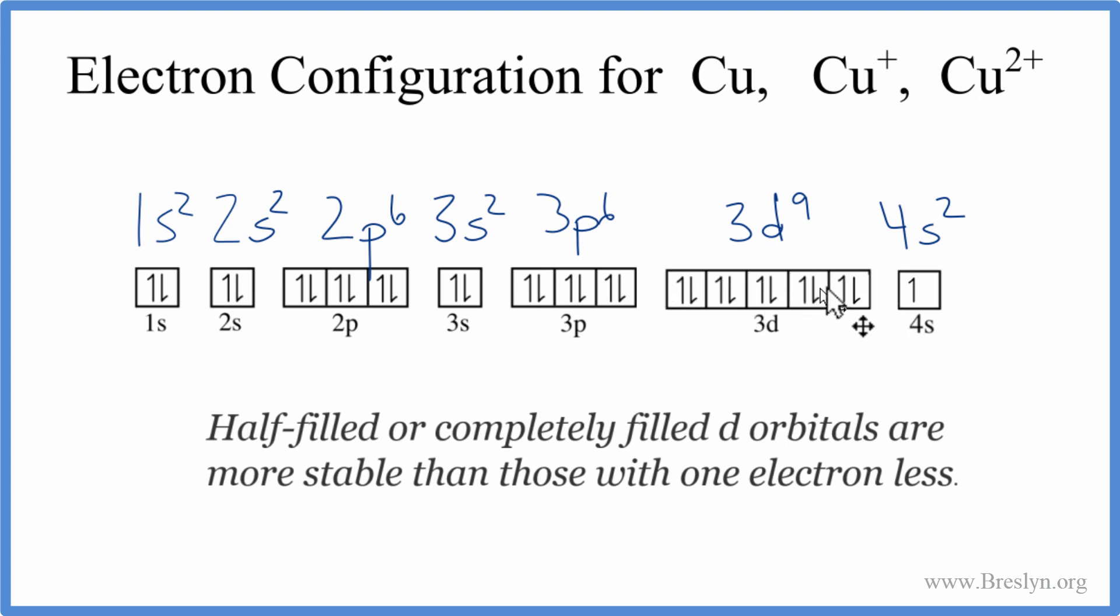So this is full now. This is more stable. And then we need to change these numbers up here. This becomes 4s1, and this becomes 3d10. So this is the correct electron configuration for copper.